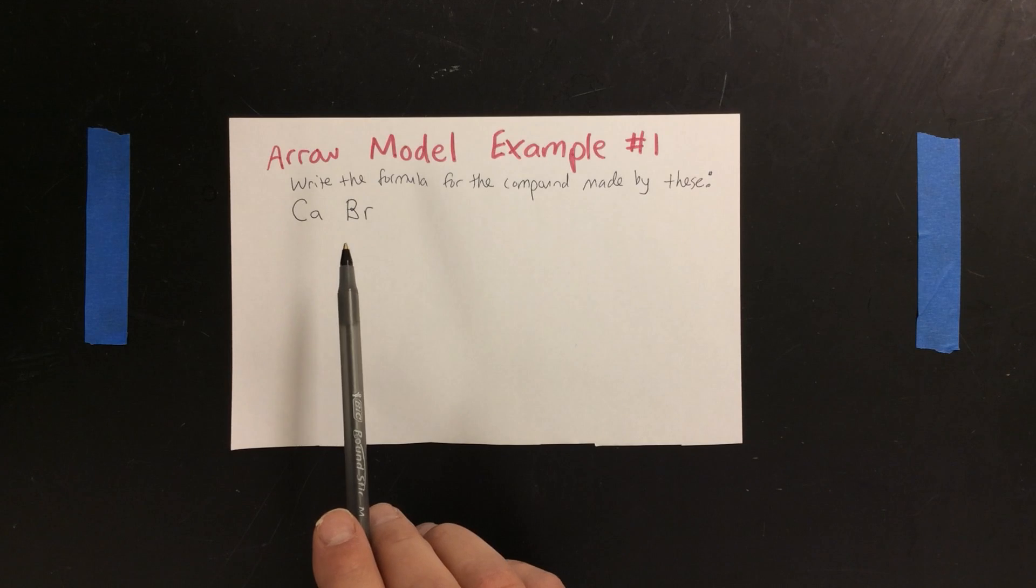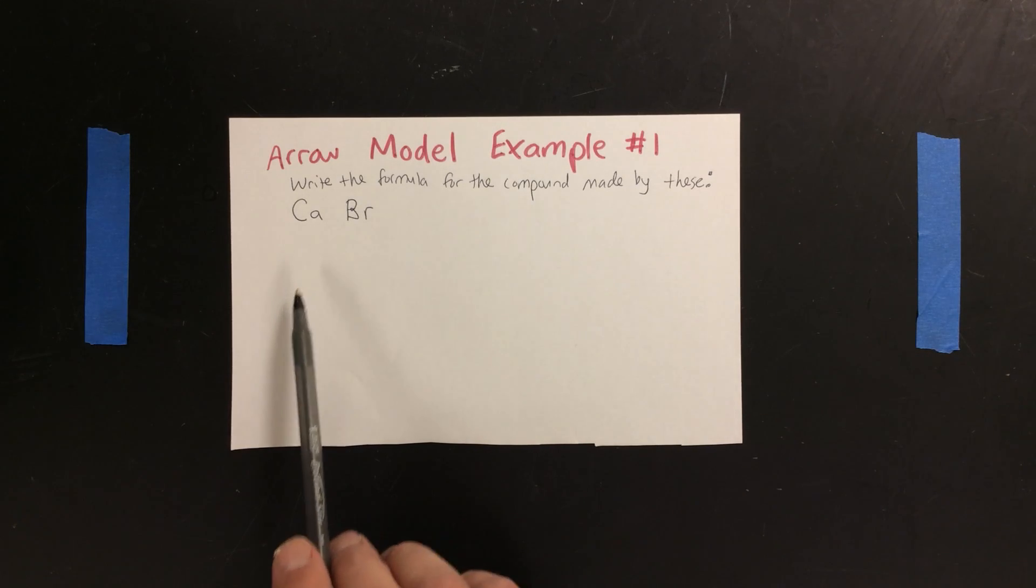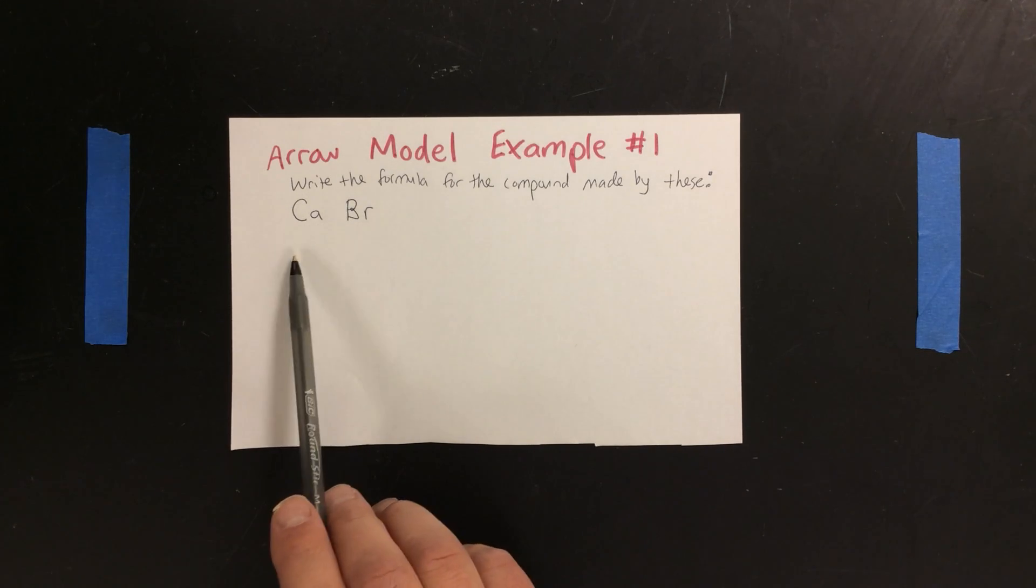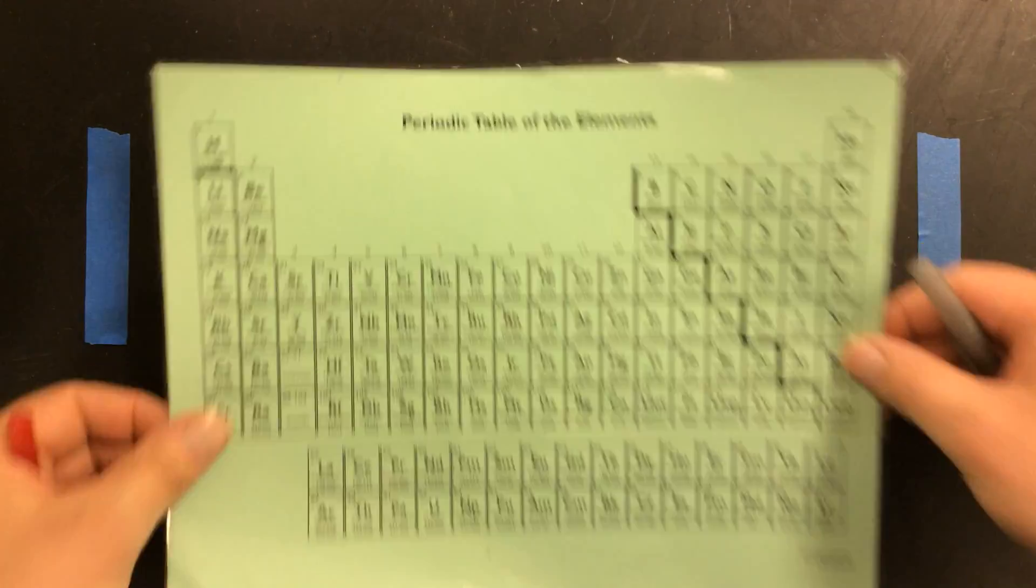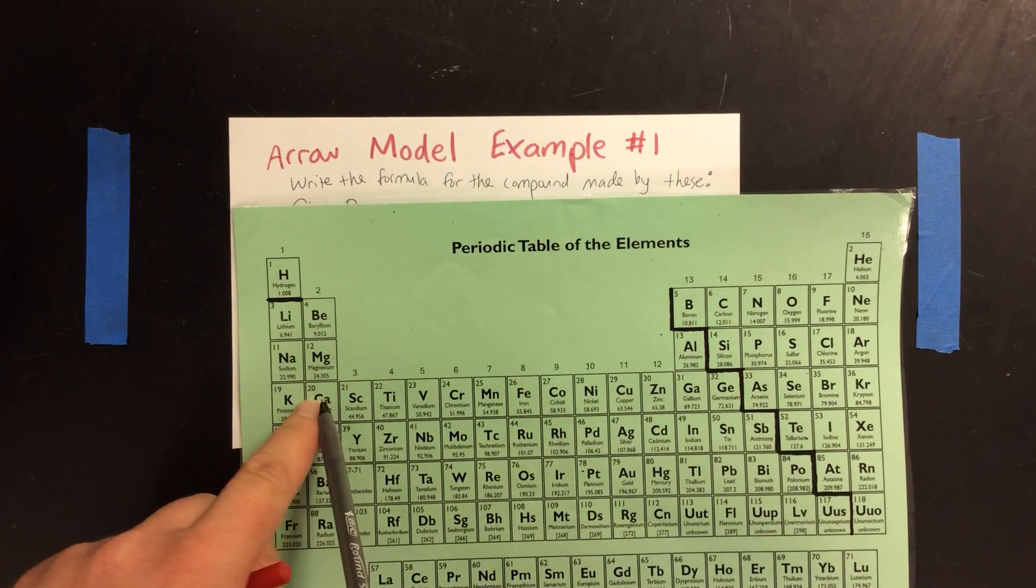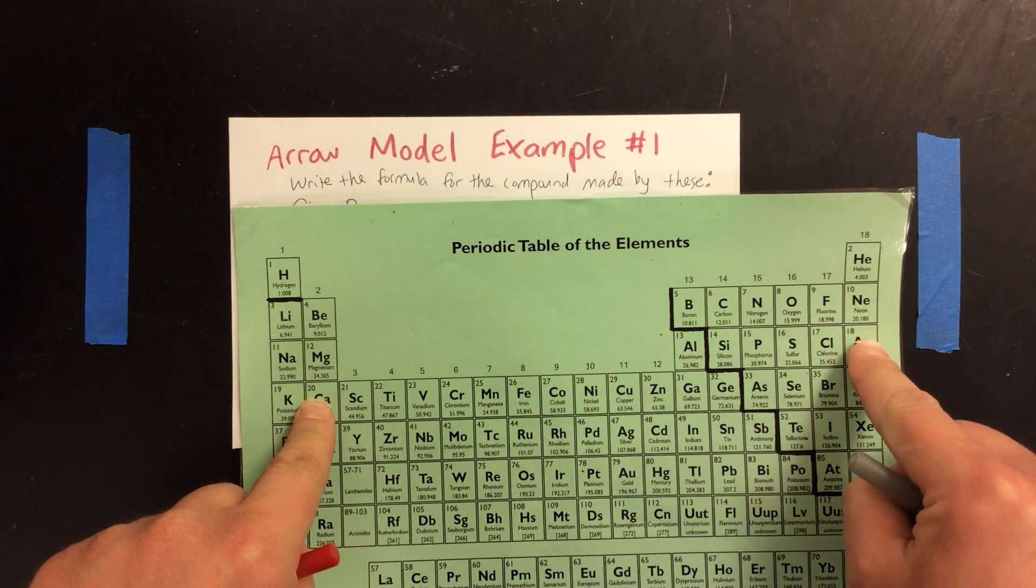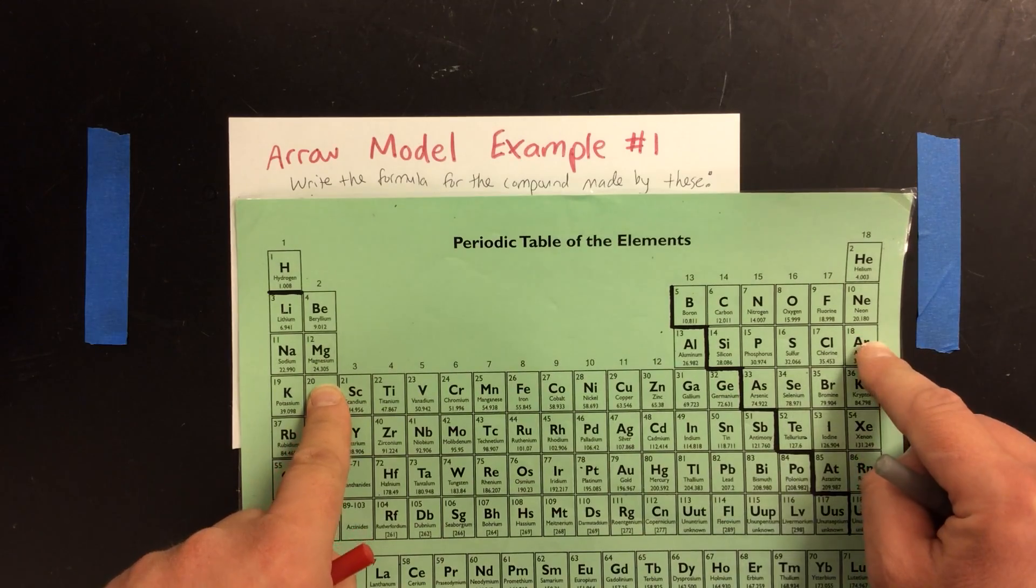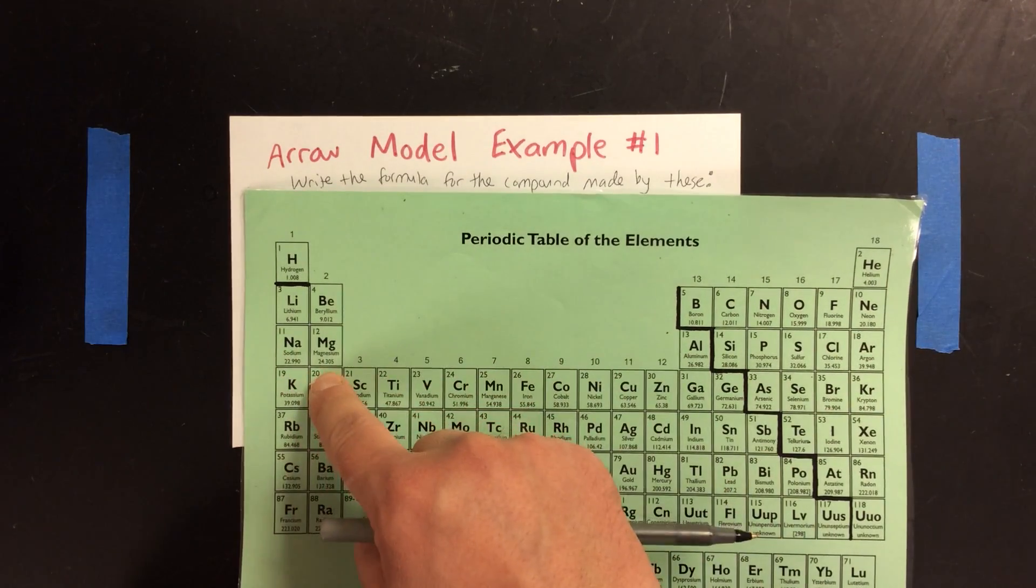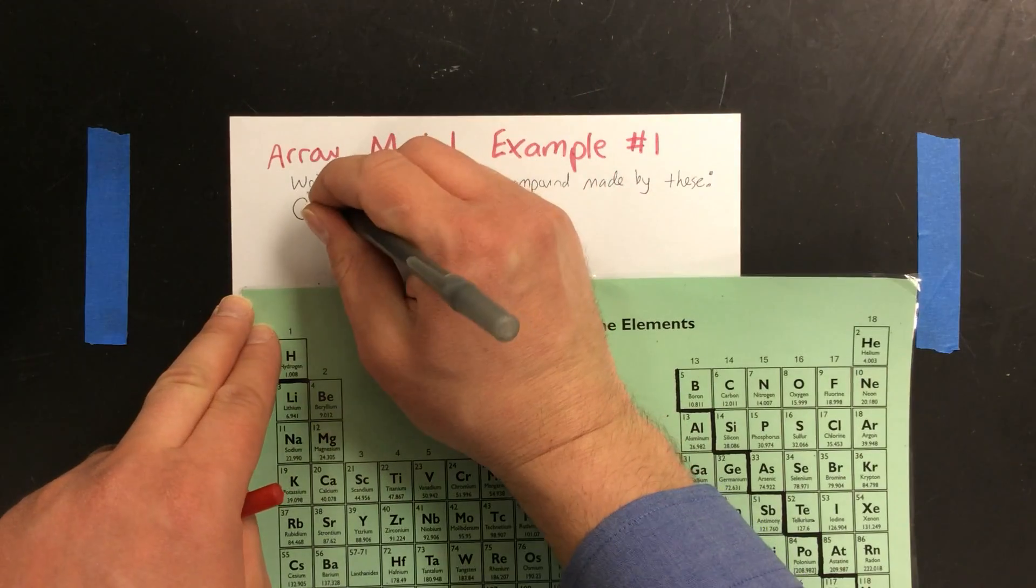The first step is to use your periodic table to find the oxidation numbers that each element would prefer to have. We'll start with calcium. I can find calcium and count from the nearest noble gas to the element. Going from argon up, this is plus one, plus two. So calcium is plus two.